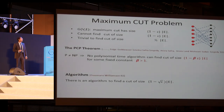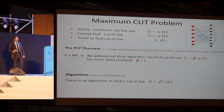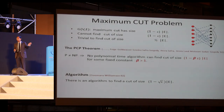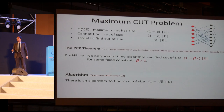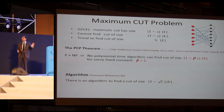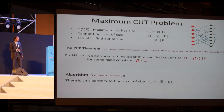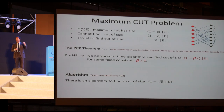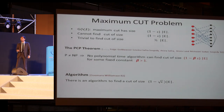On the other hand, Goemans and Williamson designed an algorithm that finds a cut of size 1 minus square root of epsilon. There is a precise trigonometric number, which once you compute gives the 0.878 Sanjeev mentioned if you only care about the multiplicative ratio. We want to think of epsilon as a small constant, so there is still a gap between 1 minus beta times epsilon and 1 minus square root of epsilon. Bridging or understanding this gap turns out to be a rather fruitful pursuit.